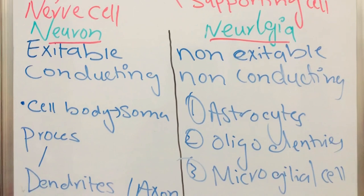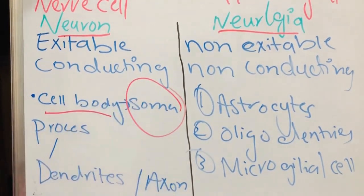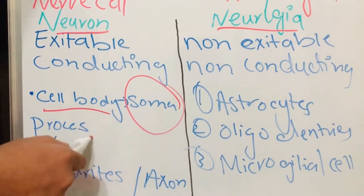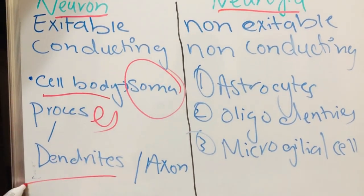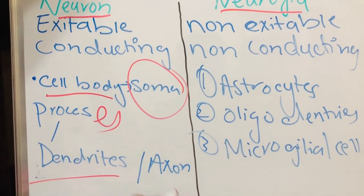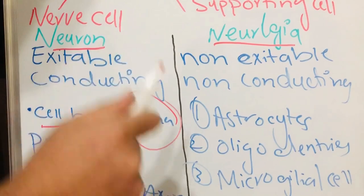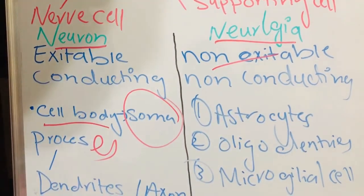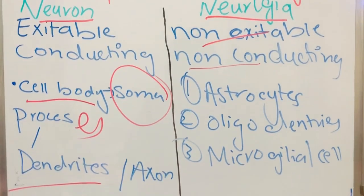First is our cell body which is called soma, and the other is the processes. We have two processes of our neuron: one is dendrites and one is axon. The neuroglia is non-excitable, non-conducting, and it has three types: one is astrocytes, second is oligodendrites, and third is microglial cells.